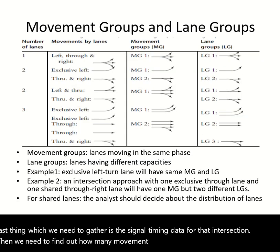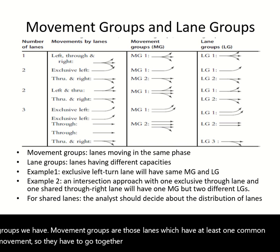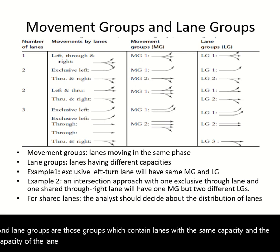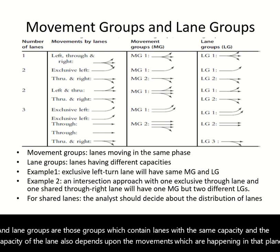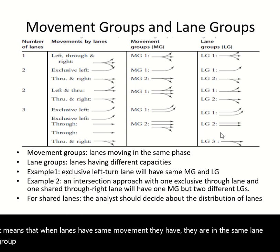Then we need to find out how many movement groups and lane groups we have. Movement groups are those lanes which have at least one common movement, so they have to go together — examples are shown here. Lane groups are those groups which contain lanes with the same capacity. The capacity of a lane also depends upon the movements happening in that lane, so when lanes have the same movement they are in the same lane group.